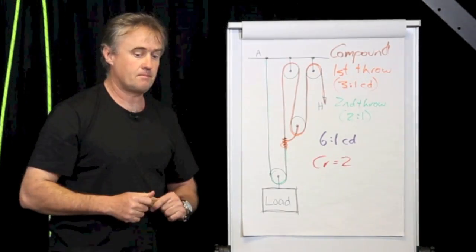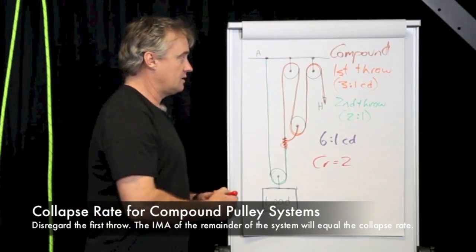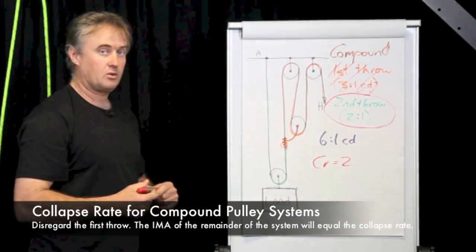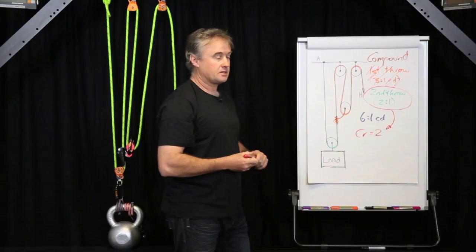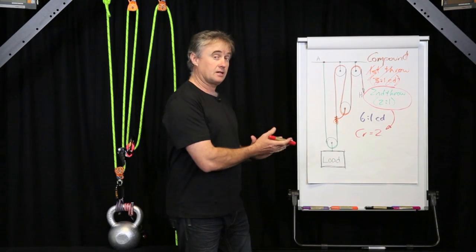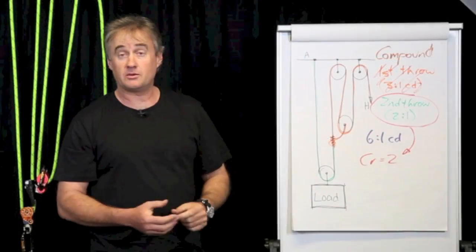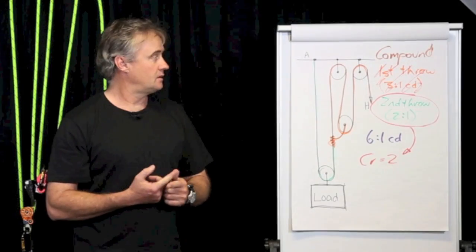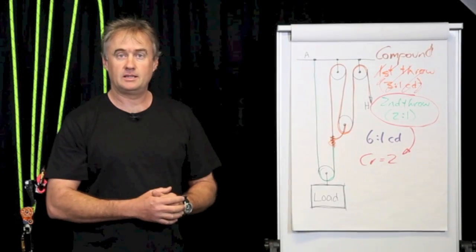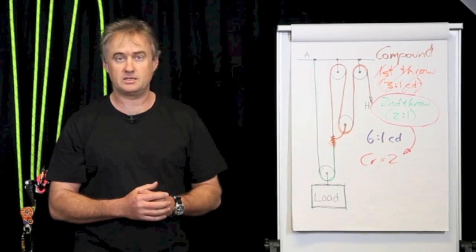Collapse rate equals two. There's an easy way to determine that: for any compound pulley system, to determine the collapse rate we disregard the first throw, look at the ideal mechanical advantage of what's left, and that becomes your collapse rate. In this case, we disregard the 3-to-1, we're left with the 2-to-1, so our collapse rate becomes two. That's true whether you've got two, three, four, or five throws in your compound system. In quick summary: collapse rate for a simple pulley system is always one. For a compound pulley system, we disregard the first throw, look at the mechanical advantage of the rest of the system, and that becomes your collapse rate. The next video will cover complex pulley systems. Thanks for watching.